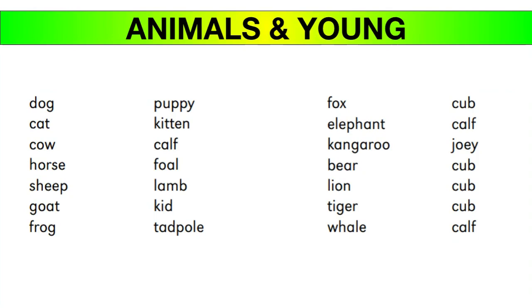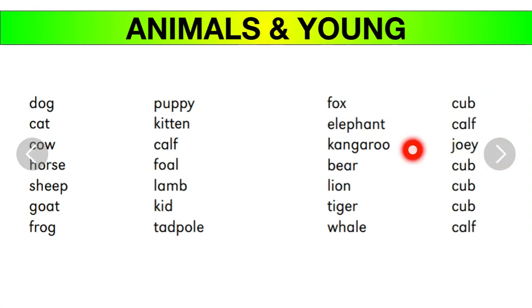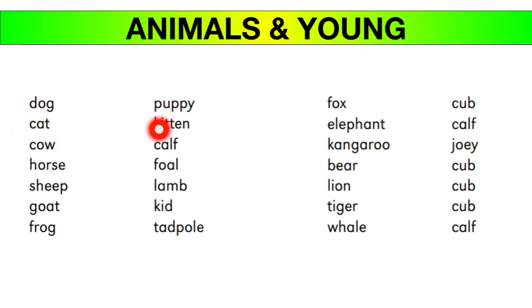Next come animals and their young ones. For example, a dog's baby is called a puppy. Please remember these names. A cat's baby is a kitten. A cow's baby is a calf — note that the 'L' is silent in 'calf.' A horse's baby is a foal. All these names fall under the common noun category.